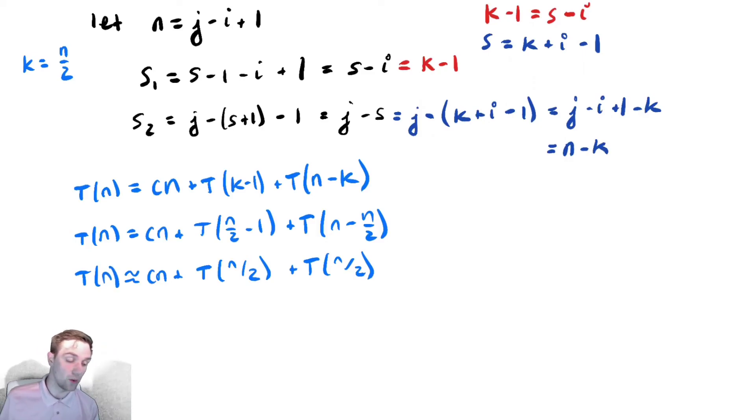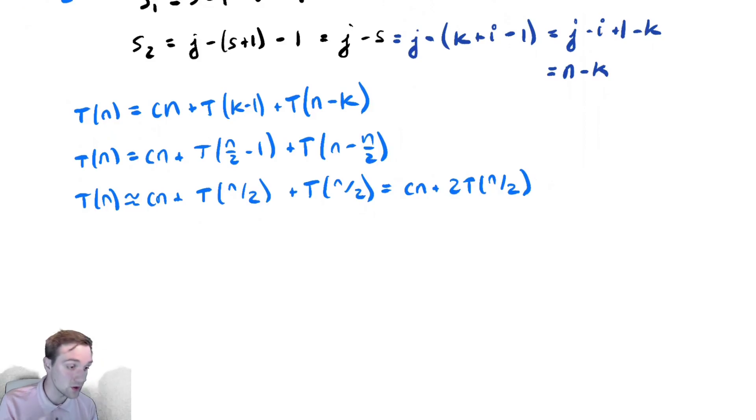And it's assuming that that median method always finds the median correctly and that we can do it in linear time, which may or may not be the case for various problems. So this recurrence relation is cn plus 2 t of n over 2. And this is all well and good, and we can analyze this. We did this exact recurrence relation when we studied merge sort, so I'm going to leave it to you to practice that. This is theta of n log n.